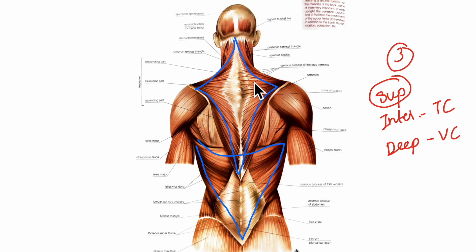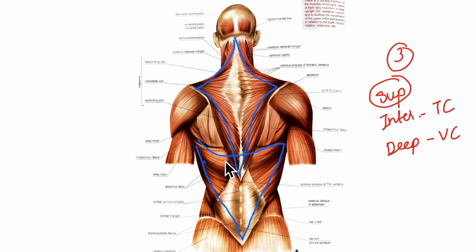I will show you the levator scapulae muscle and the rhomboids in another diagram. As you can see here, the trapezius muscle and the latissimus dorsi muscle lie the most superficially, while the trapezius covers the rhomboids and levator scapulae muscle.